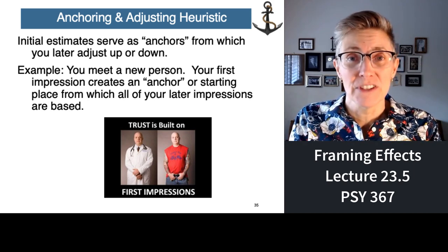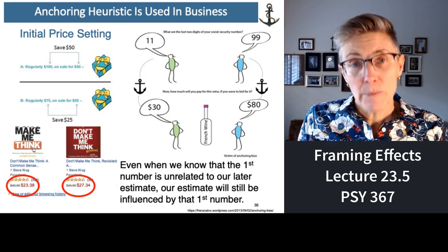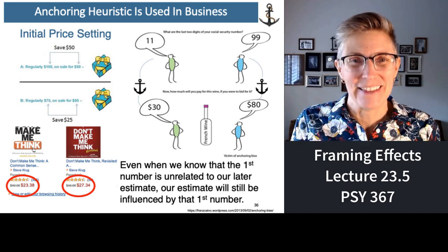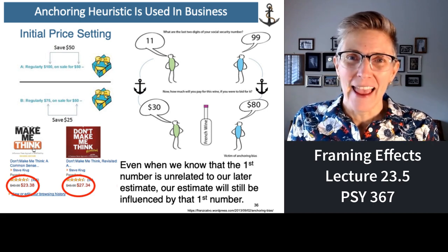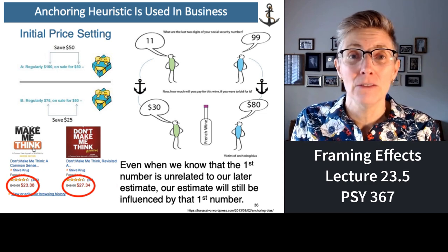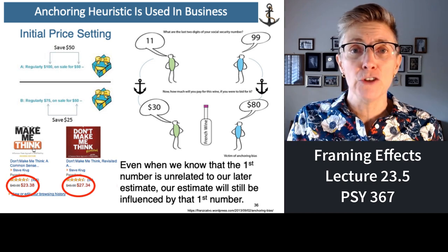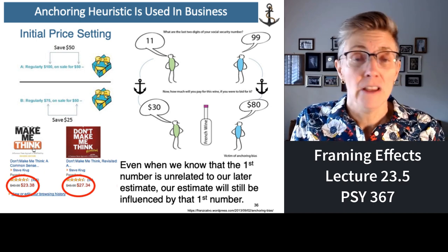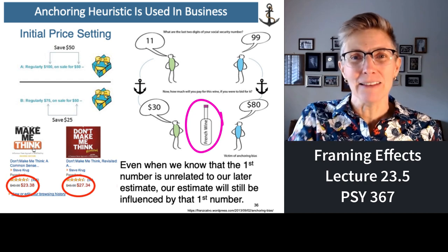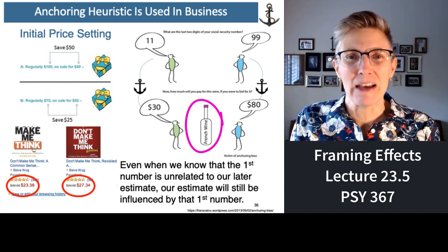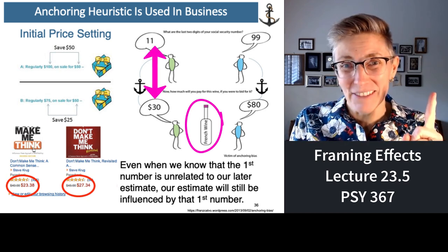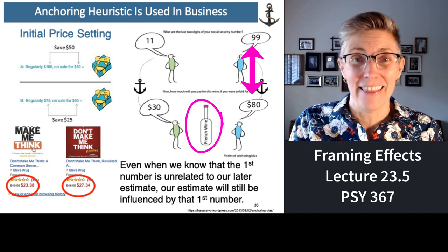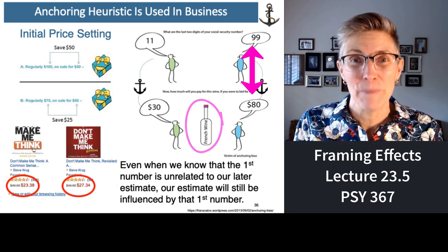The first impression is an anchor that holds everything else down. Here's a great study: imagine you walk into a room and the researcher says, tell me the last two numbers of your social security number. One subject says 11, another says 99. Then the experimenter puts a bottle of wine in front of you and asks how much you think it's worth. The people who said 11 think the wine is worth less than those who said 99. That's the anchoring heuristic.